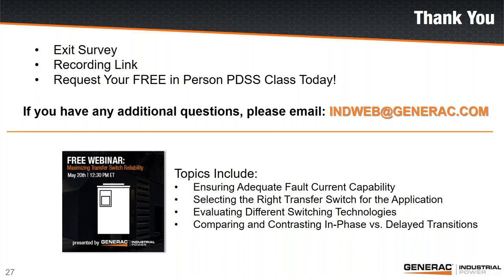Is speed control only a concern with standby applications? Speed control is a concern any time we're running isolated from the grid — we must control speed and voltage. When tying a generator into the grid, the governor and voltage regulator still respond to changes in speed and voltage, which is why outer control loops need to be added — whether import-export control or changing from isochronous to speed droop mode — to allow generators to share load with the grid.